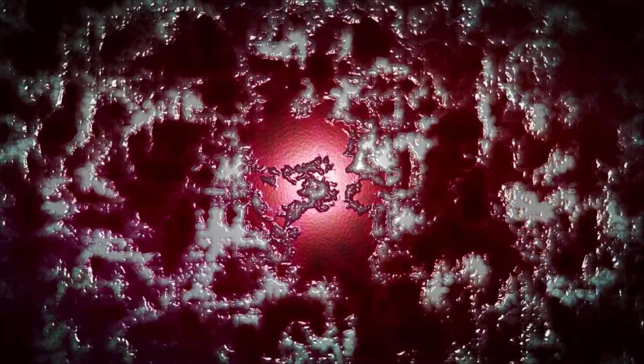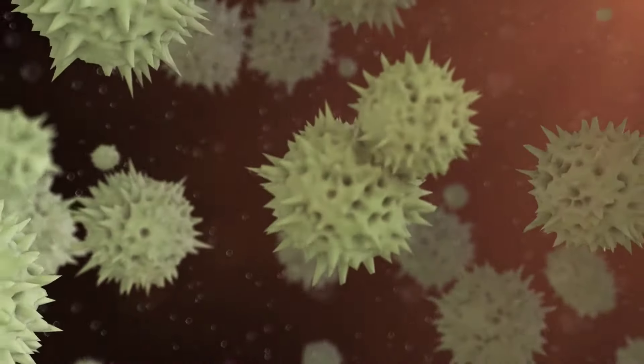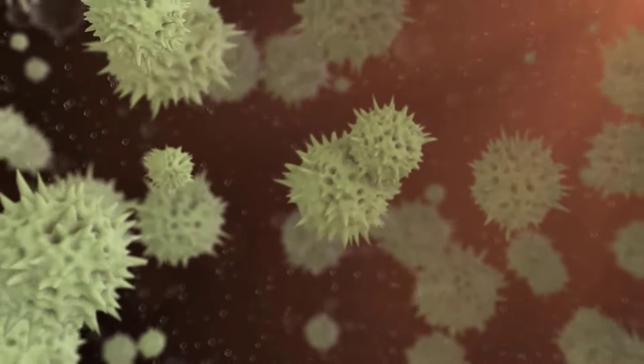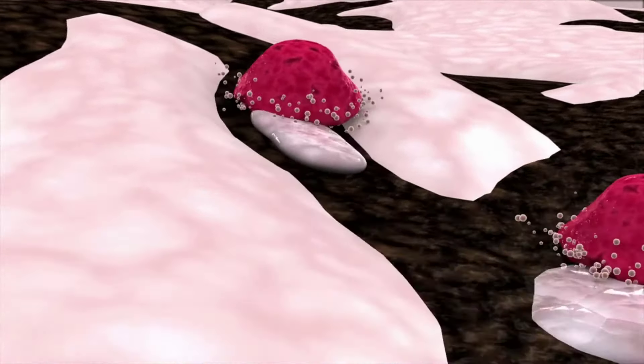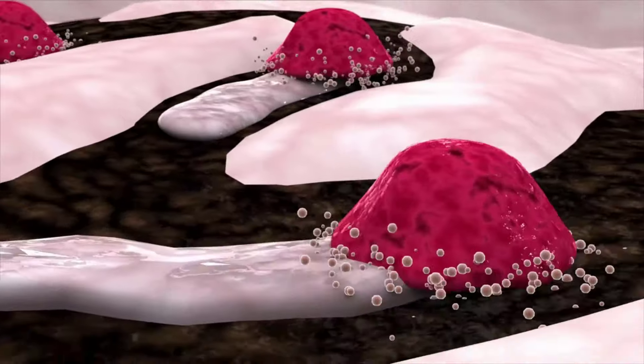Sometimes, a mixture of dead leukocytes and fluid, called pus, accumulates within the wound. As healing progresses, fibroblasts from the surrounding connective tissue replace the collagen and extracellular material lost by the injury.